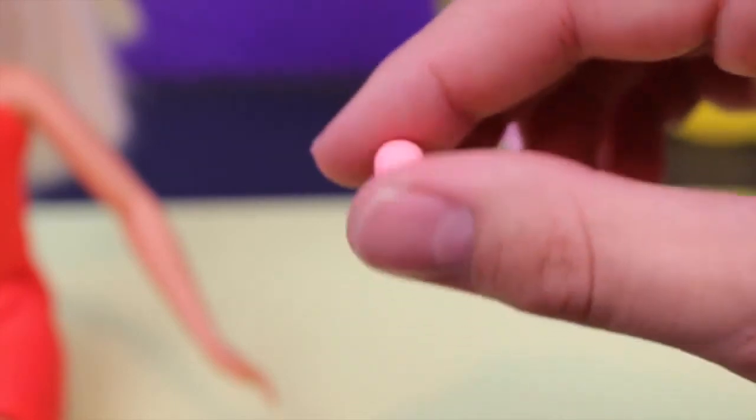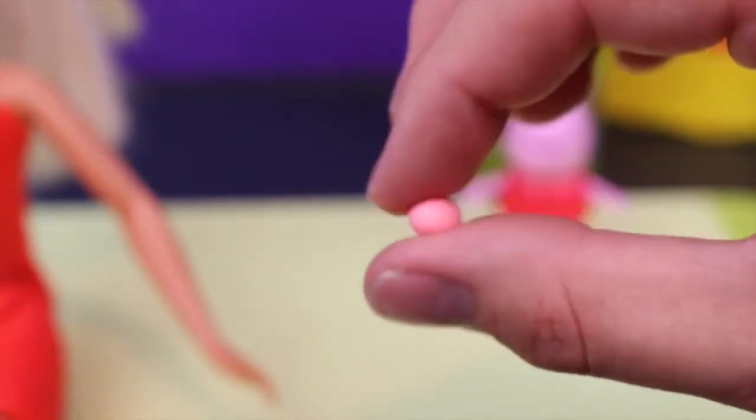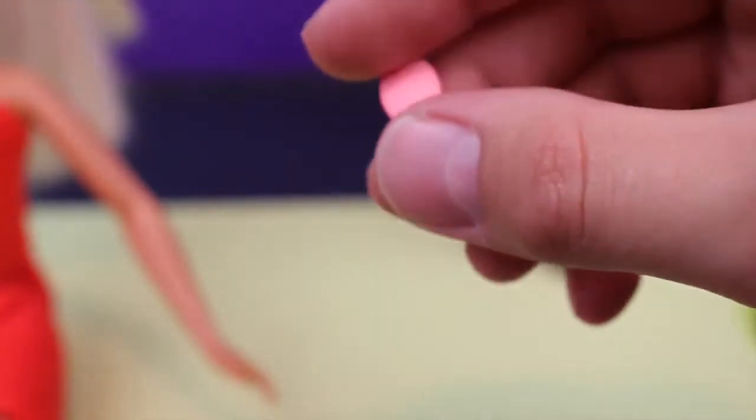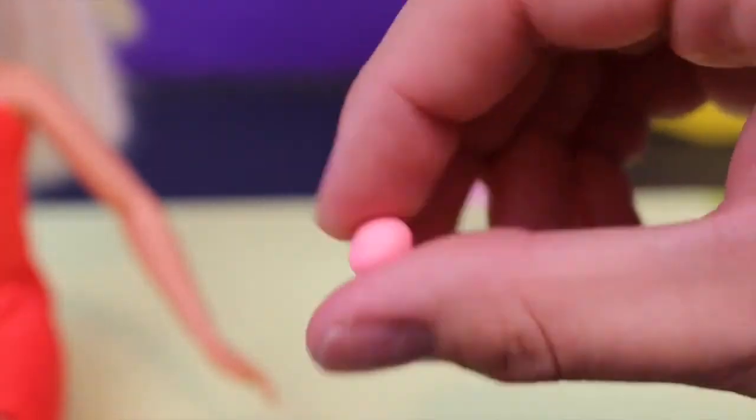And for the ears I'm just gonna use this light pink Play-Doh and I'm just gonna roll it into a little ball with my fingers and kind of smushing it out and kind of just shape it into like a long oval-y flat shape.